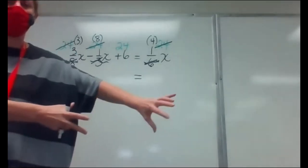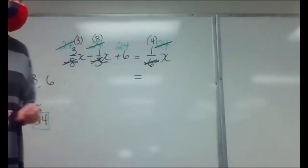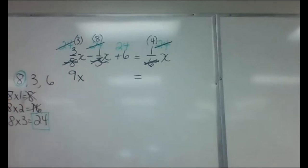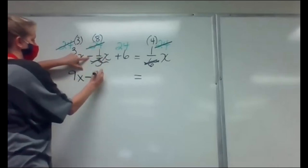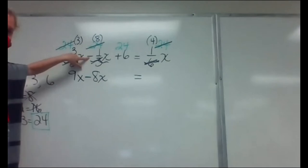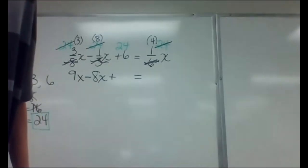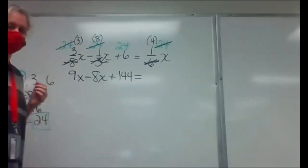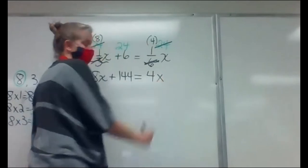Now multiply what's left. 3 times 3X — don't lose your X — gives me 9X. Minus 8 times 1X gives me 8X. Plus 24 times 6 gives me 144. There's my equal. 4 times 1X gives me 4X. This equation is much nicer than that original one with all the fractions.